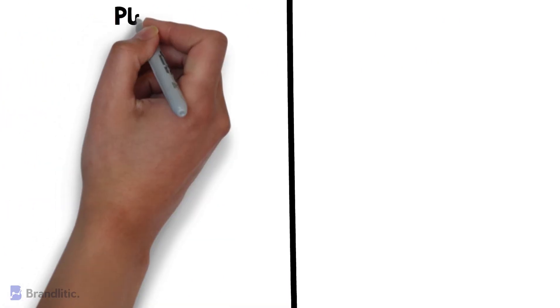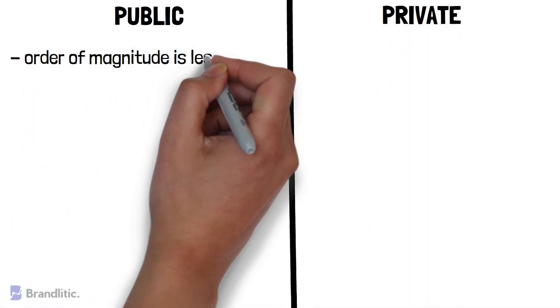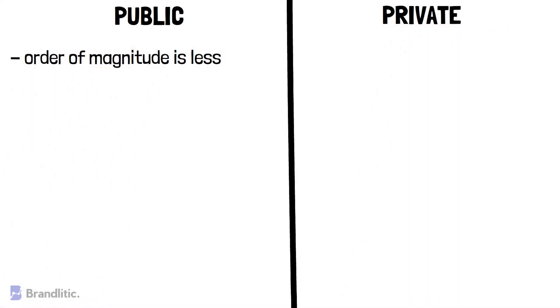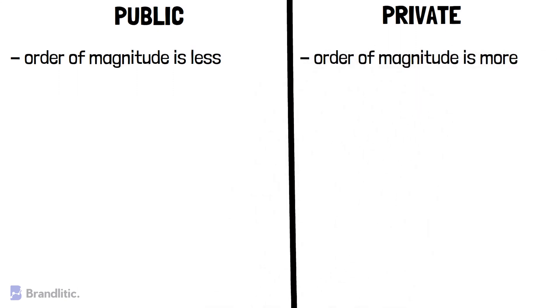Moving further, let's discuss the major differences between public and private blockchains. First, the order of magnitude of public blockchain is lesser than that of a private blockchain, as it is lighter and provides transactional throughput, whereas in private blockchain, the order of magnitude is more as compared to the public blockchain.